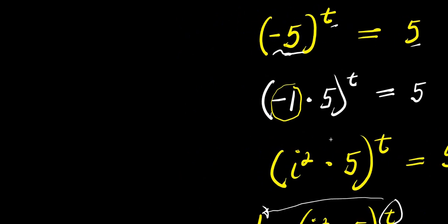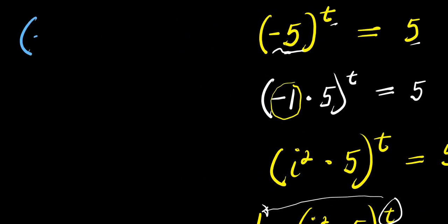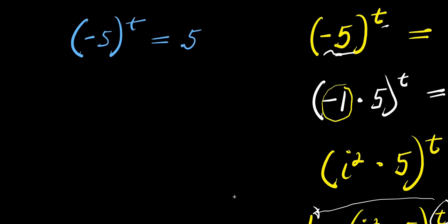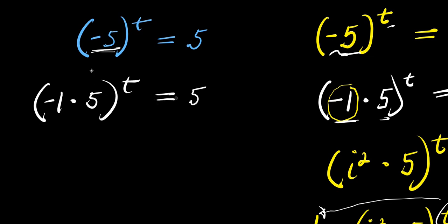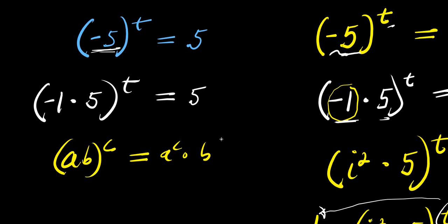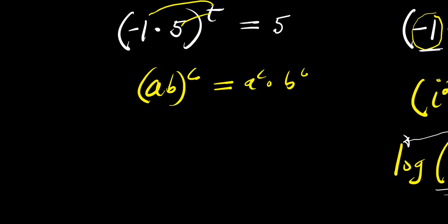Now let's consider the second method. We are going to have the same question again: negative 5 to the power of t equals 5. The first step will be the same — I'm going to replace negative 5 as the product of negative 1 and 5. So I have (negative 1 times 5) raised to the power of t, and this equals 5. Then I'm going to apply the identity: (a times b)^c equals a^c times b^c, distributing the exponent to each term. So I'm going to have negative 1 to the power of t times 5 to the power of t, and this equals 5.